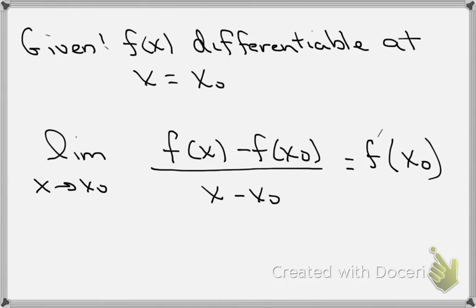We need to think about what's given and what we have to show when we're doing a proof. We're given that f of x is differentiable at x equals x naught. So using our definition of derivative, we get the limit as x goes to x naught of f of x minus f of x naught divided by x minus x naught, equal to f prime of x naught.